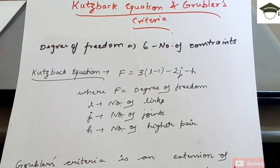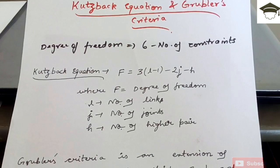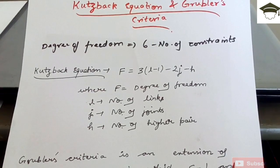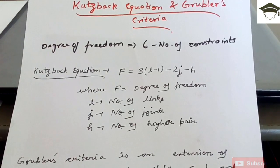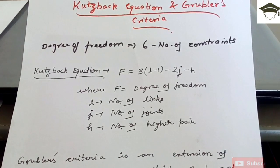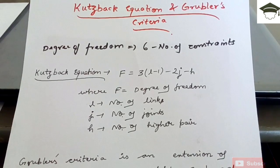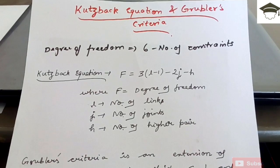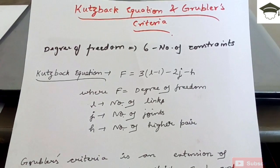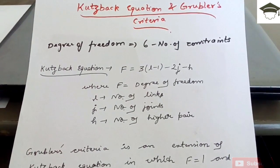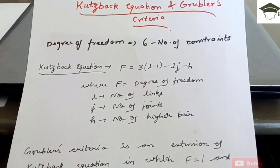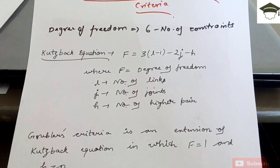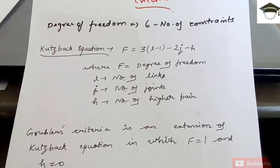Now Grubler was a second scientist. He utilized the Kurtzbach equation and gave his formulation. He used the equation and he substituted degree of freedom equal to one and higher pair equal to zero, that is for a kinematic chain. Now putting the value of F equal to one and h equal to zero we get the relation three L minus two j minus four equal to zero. Now it is clear from this equation that the number of links L should be even in order to satisfy the whole equation.